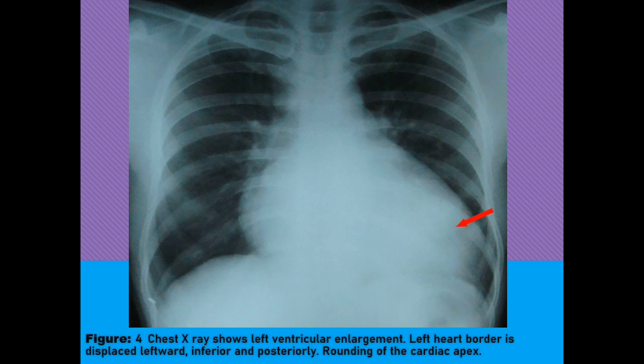This is an X-ray from a patient with left ventricular enlargement, otherwise known as cardiomegaly. In most cases, merely eyeballing a chest X-ray will be sufficient in detecting cardiomegaly as the heart is either clearly normal in size or clearly abnormally enlarged. In equivocal cases, the cardiothoracic ratio can be easily calculated on a PA X-ray. A ratio greater than 0.5 is an abnormal finding. Here we can see that the left heart border is displaced leftward, inferiorly and posteriorly, thereby rounding of the cardiac apex.